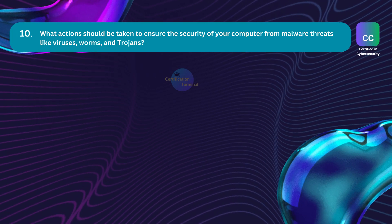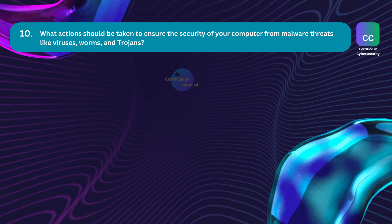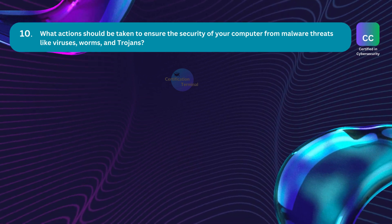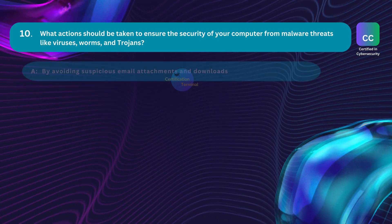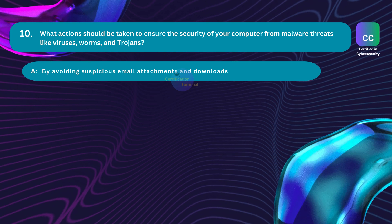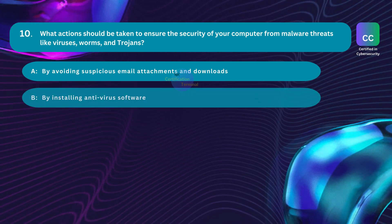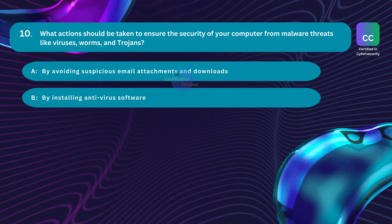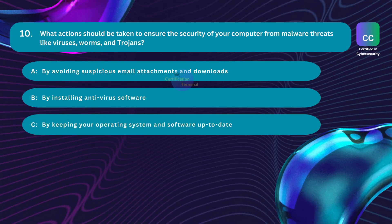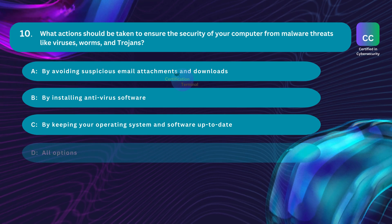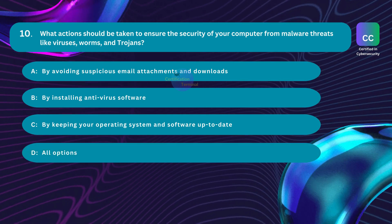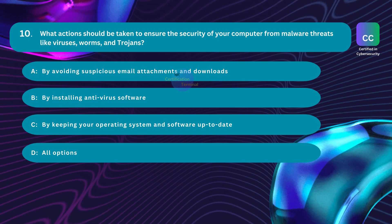Question number ten: what actions should be taken to ensure the security of your computer from malware threats like viruses, worms, and trojans? Option A: avoid suspicious email attachments and downloads. Option B: install anti-virus software. Option C: keep your operating system and software up to date. Option D: all options. The correct answer is option D: all options, as each action contributes significantly to enhancing security against malware threats.